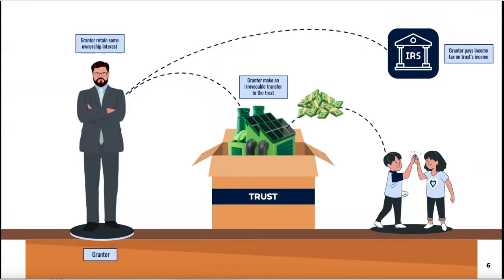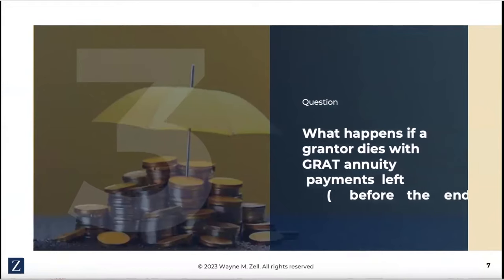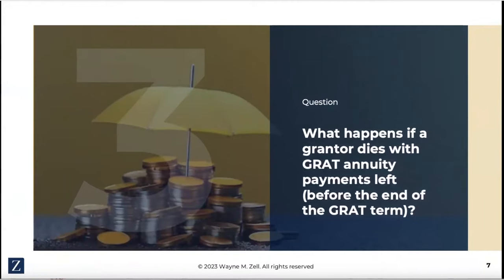When you set up the trust, the grantor makes an irrevocable transfer to the trust with a named beneficiary. At the end of the GRAT term, what's left over goes to the named beneficiaries. The amount that gets paid back to the grantor is known as an annuity, and it gets paid out for a period of years based on the fair market value of the assets that were contributed to the trust. The annuity is determined by using the IRS's 75-20 rate, which was 5% in March of 2024. A grantor trust differs from a non-grantor trust — non-grantor trusts pay tax on their income, or distribute the income out to the beneficiaries, and they pay the tax.